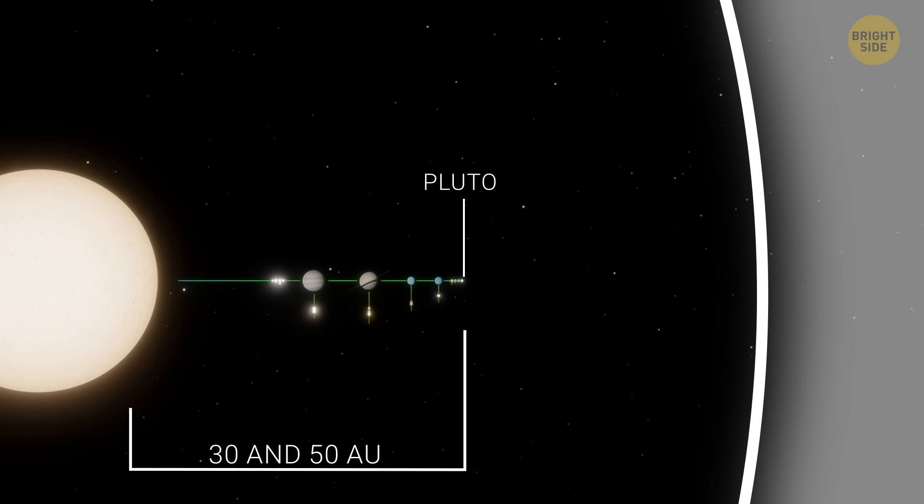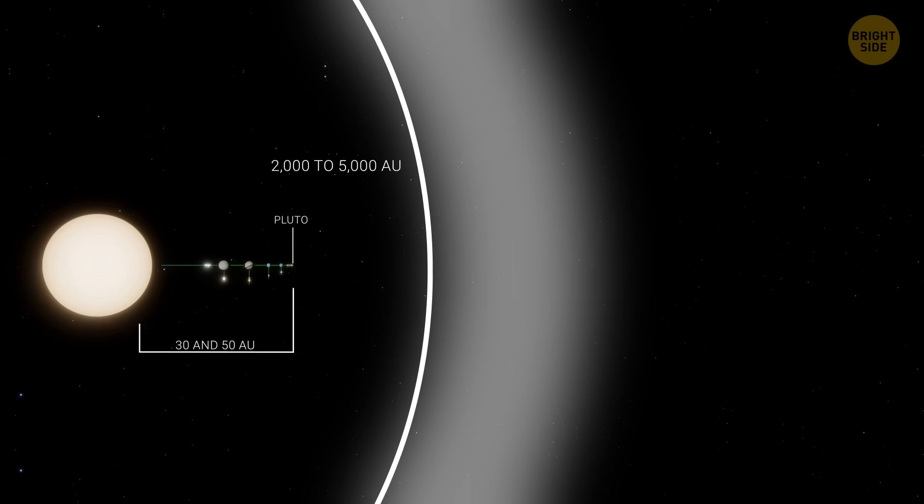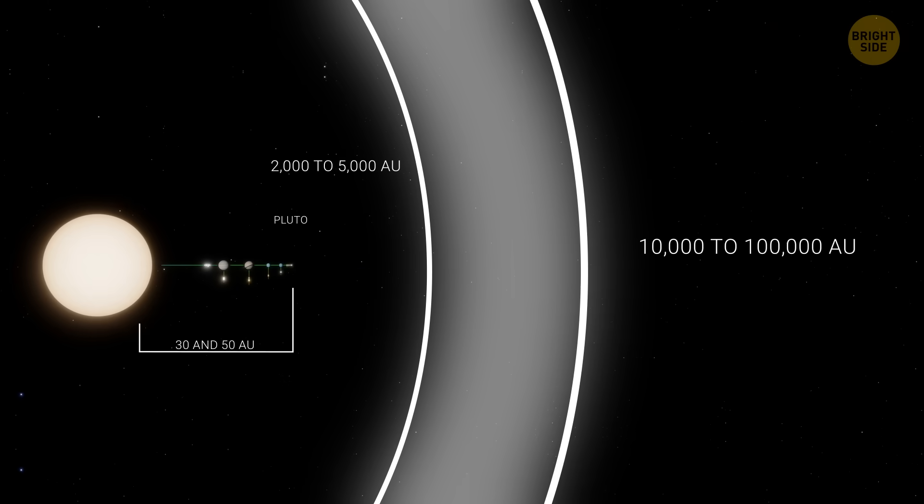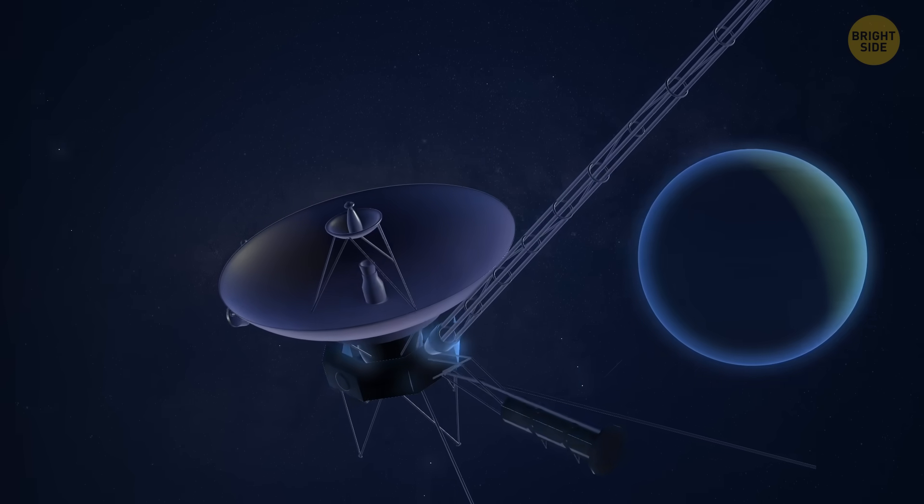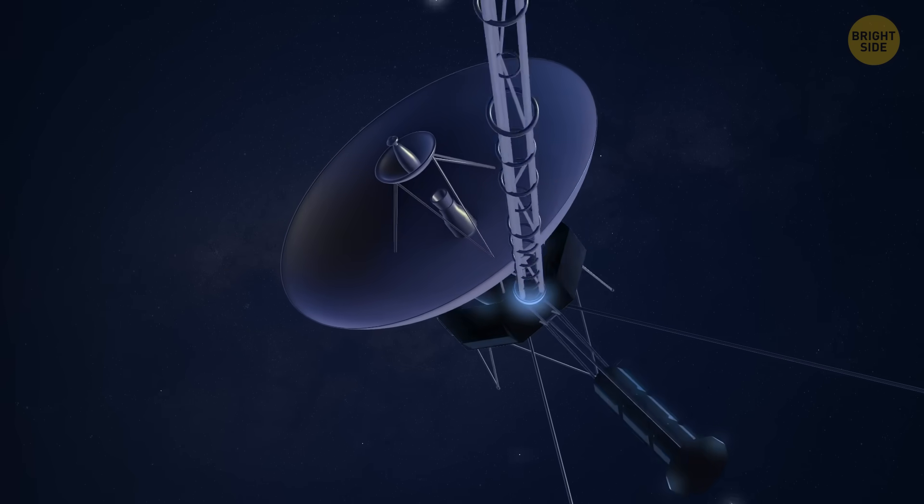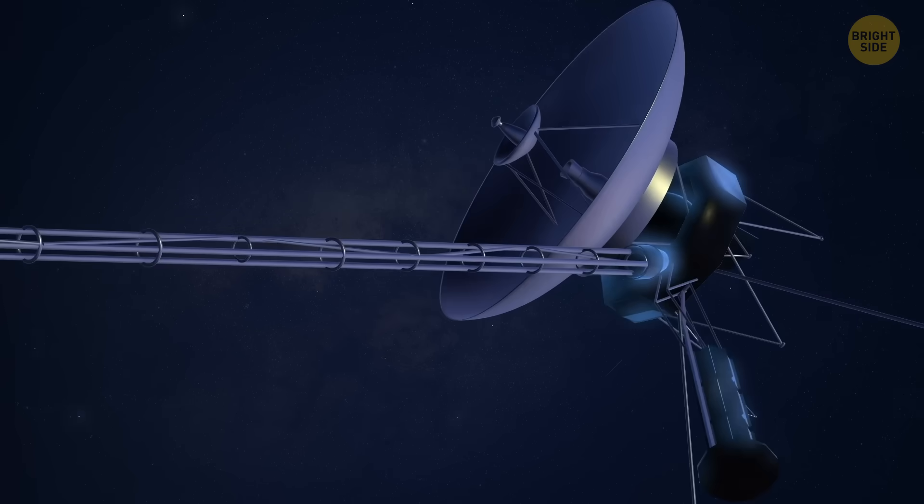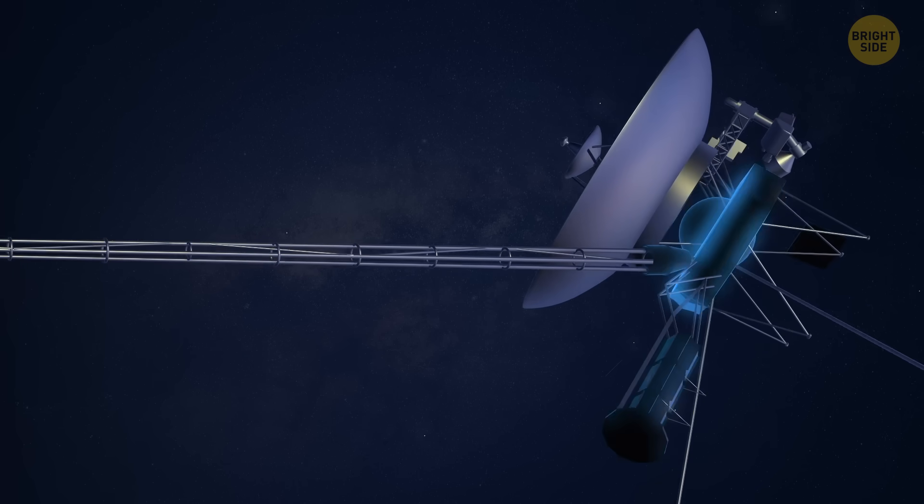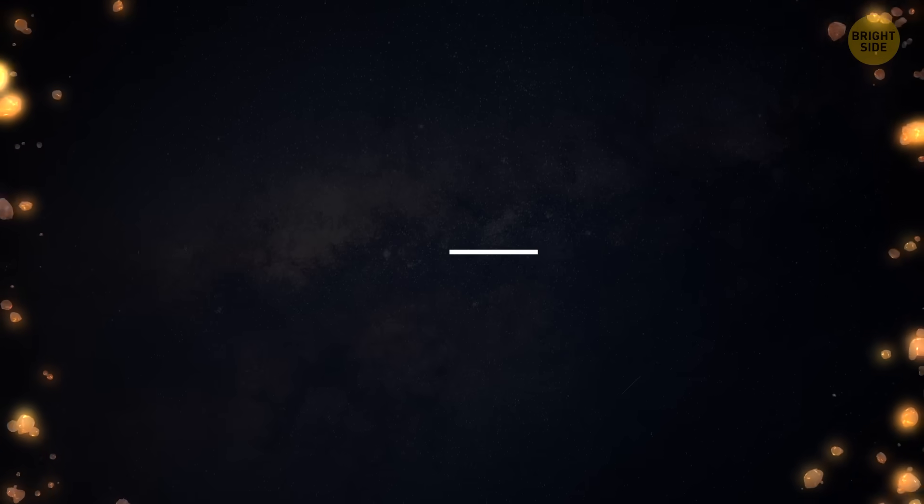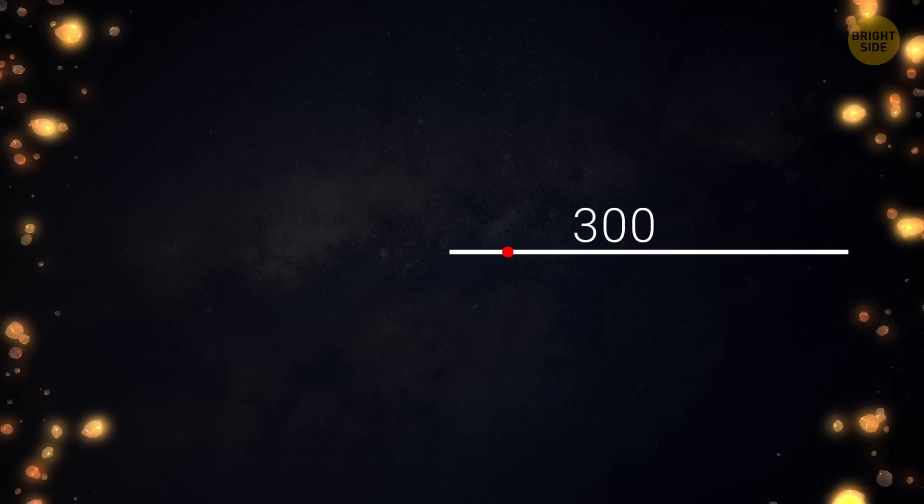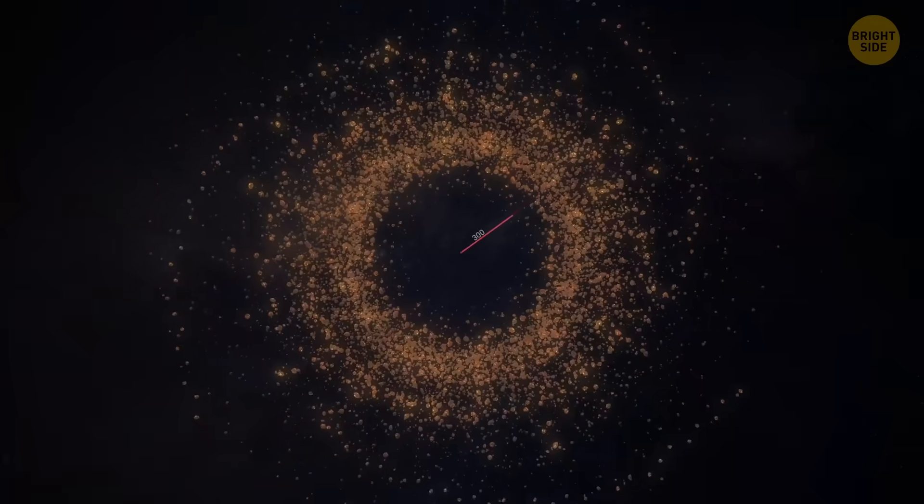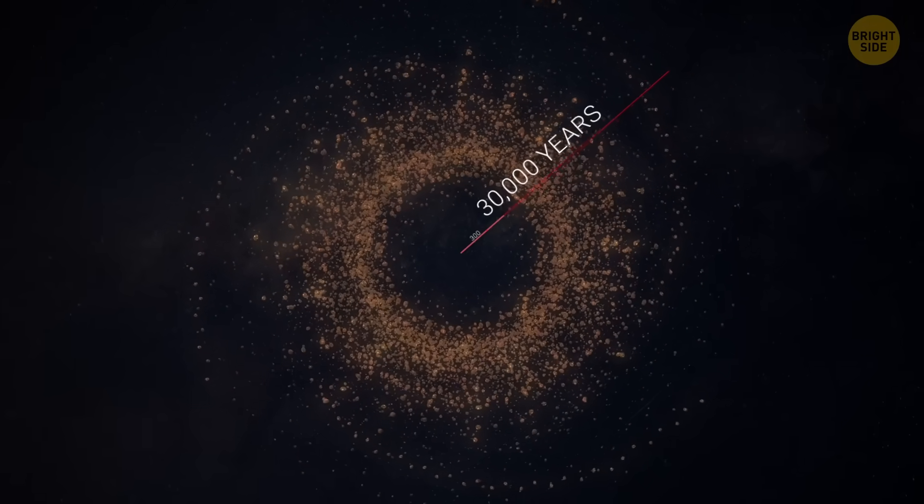The inner edge of the Oort cloud is thought to be much, much farther away, and the outer edge could be even further. These distances are very hard to imagine. NASA's Voyager 1 spacecraft makes almost 1 million miles per day. At that speed, it would take about 300 years to reach the Oort cloud, and maybe 30,000 years to reach its outer edge.